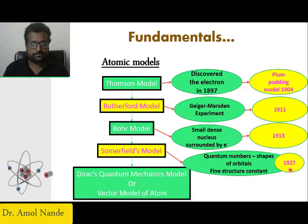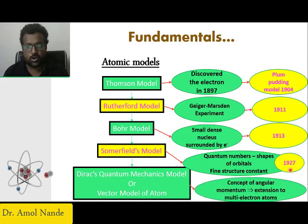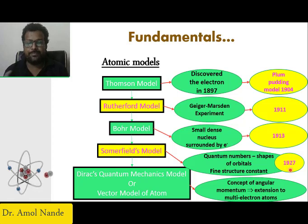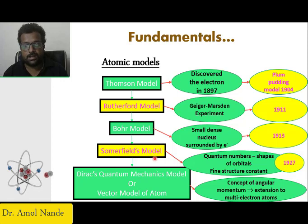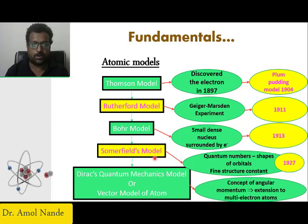Finally, the Dirac quantum mechanics model — the vector model of the atom — came into picture. This model talks about angular momentum; it says the electron, nucleus, everything is in motion, and it can be easily applied to multi-electron atoms. Up to the Sommerfeld model it was very difficult to explain atoms having more than one electron. The vector model is quite famous for that. So in summary, the models we looked at are: Thomson model, Rutherford model, Bohr model, Sommerfeld model, and finally the Dirac quantum mechanics vector model of the atom.